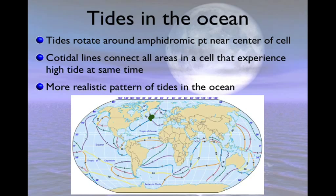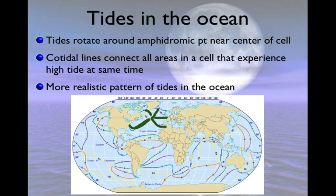The amphidromic point is the point in the northern Atlantic Ocean around which the tide rotates. It rotates in one direction: at one point we have high tide, two hours later it's rotated to the next position, four hours later to the next, six, eight, and so on. At the amphidromic point itself, you see no tide — the tide doesn't go up or down there. It's rotating around that center.